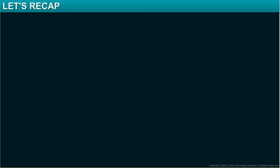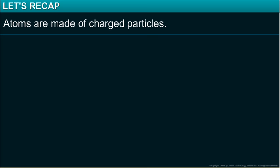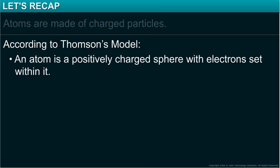In this module, you have learned that atoms are made of charged particles. According to Thomson's model, an atom is a positively charged sphere with electrons set within it. An atom is electrically neutral.